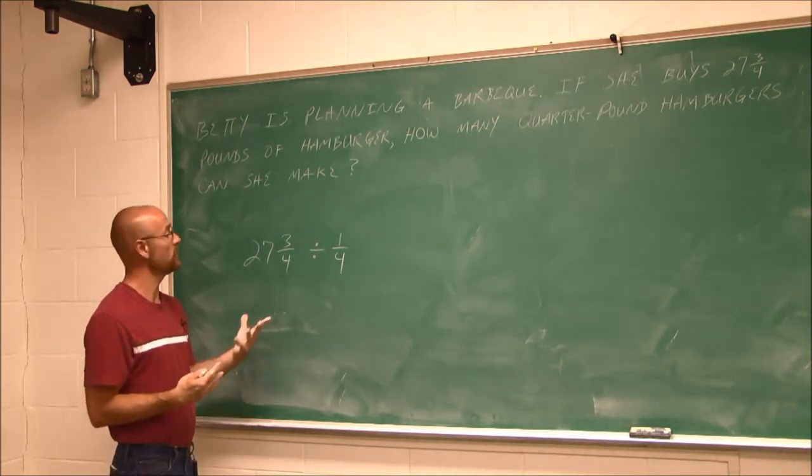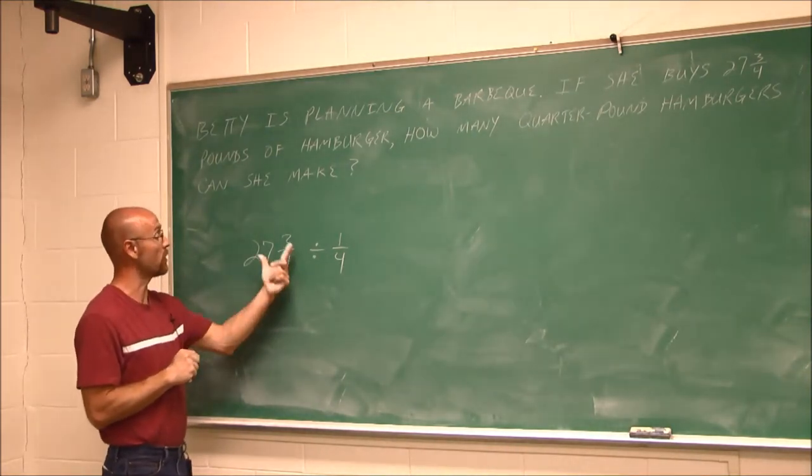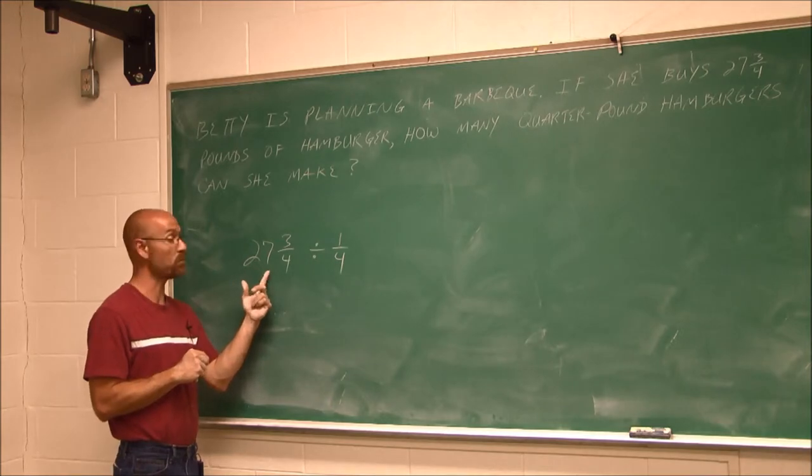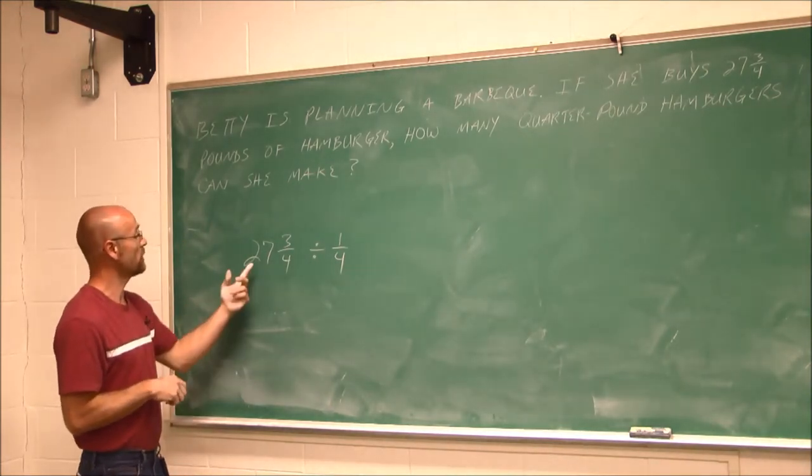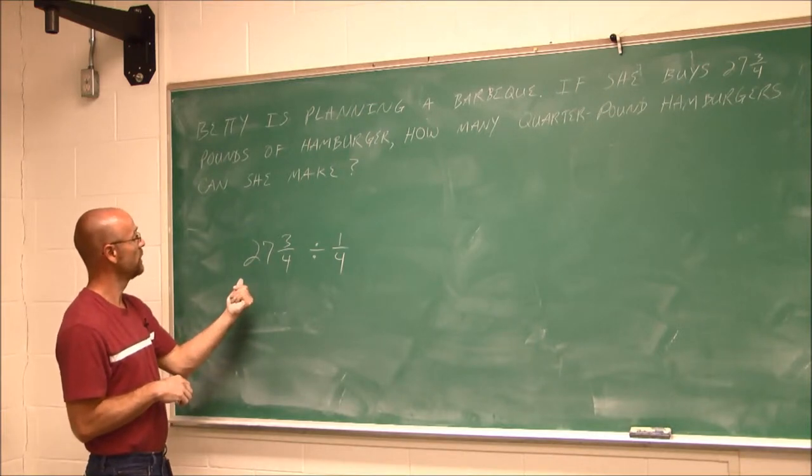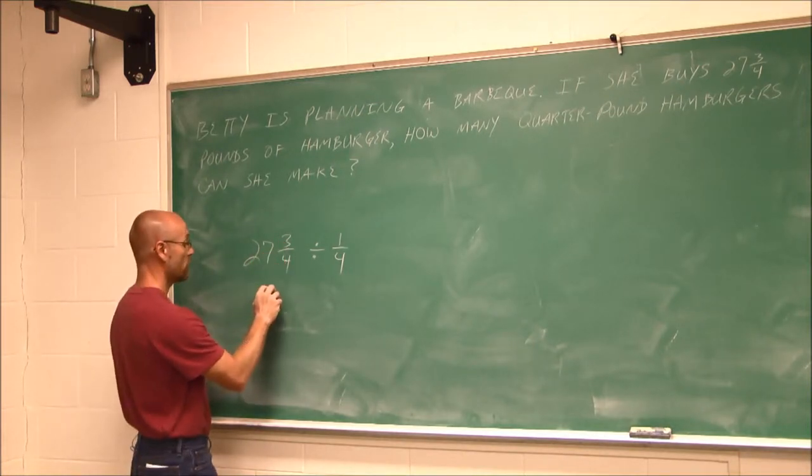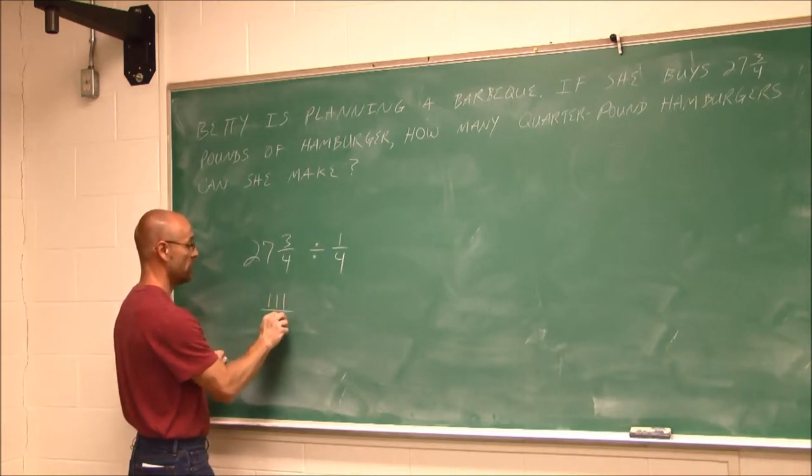We think, OK, well, how are they different? Well, the first step is always the same. We want to write this as an improper fraction. So I'm going to say 27 times 4. And that's going to give me 108 plus 3. So that's going to be 111 fourths.